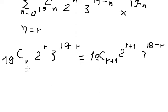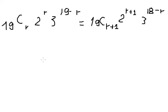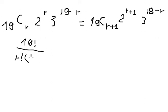Now we need to simplify to find the value of r. We write 19Cr as 19 factorial over r factorial times 19 minus r factorial.